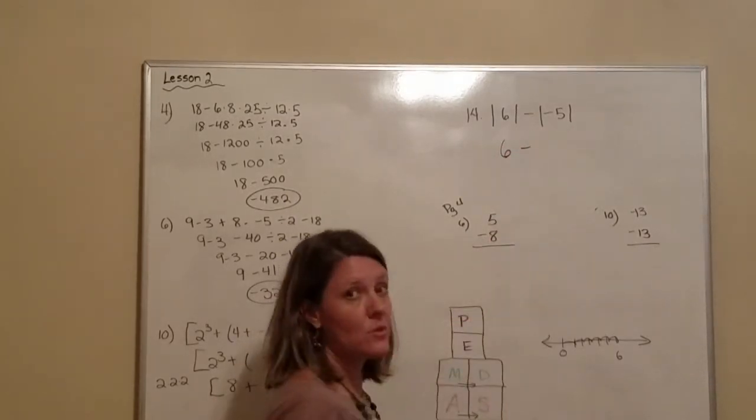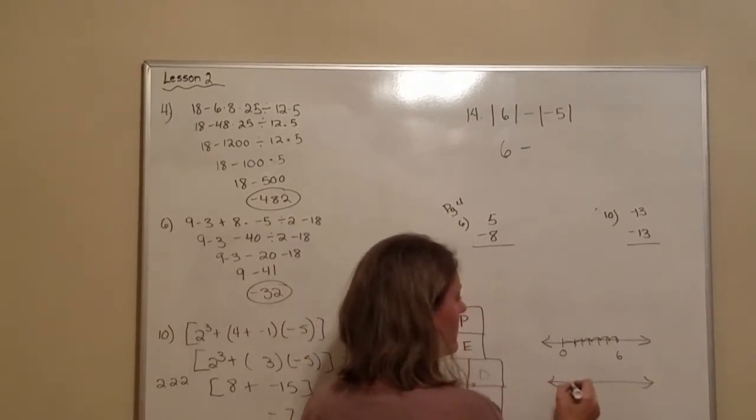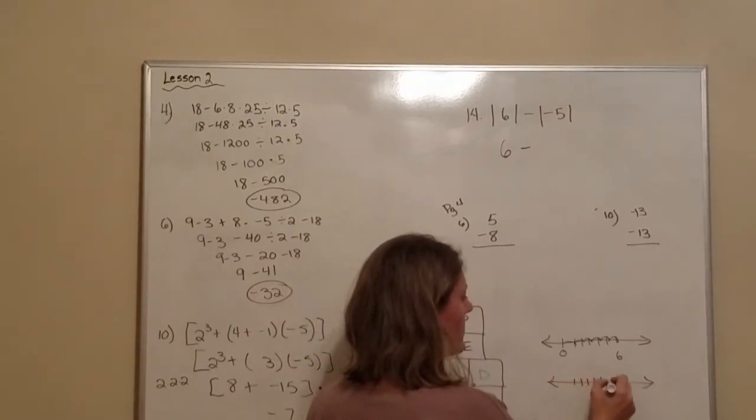Now we need to find the absolute value of negative 5. Negative 1, negative 2, negative 3, negative 5.